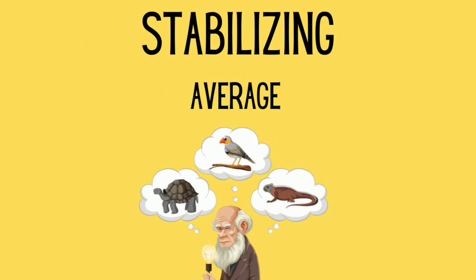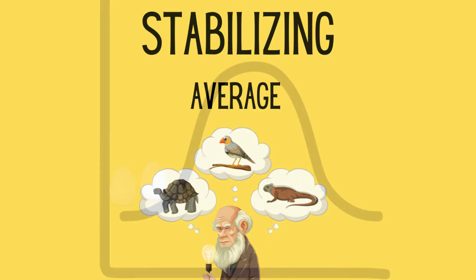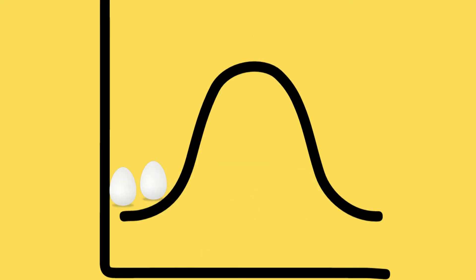Stabilizing selection occurs when the environmental factor selects for the average of a trait. One example is the number of eggs a bird population lays. Many birds may lay two eggs, but this may not be enough for the birds to survive, and four eggs may be too many birds to feed. Over time, the population will stabilize around three eggs.